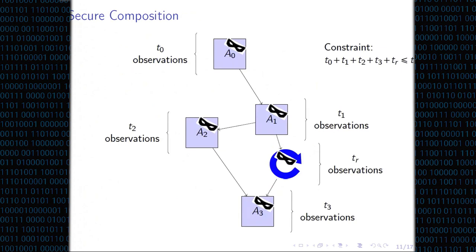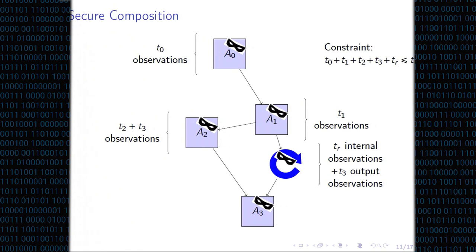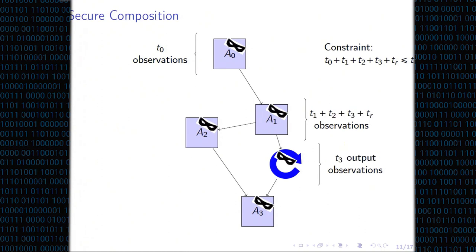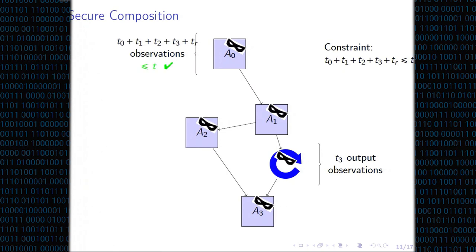When you hit a strong non-interference gadget in the simulatability proof, you forget about all the observations you've been carrying in your simulation — and this is what allows compositional reasoning to go through. Assuming the refreshing gadget is strongly non-interfering: pushing back T3 gives T2 plus T3 on A2 and TR internal plus T3 output observations on the refreshing gadget. Using TSNI on the refresh gadget, only TR shows up — the second T3 disappears — giving us the right constraint smaller than T.